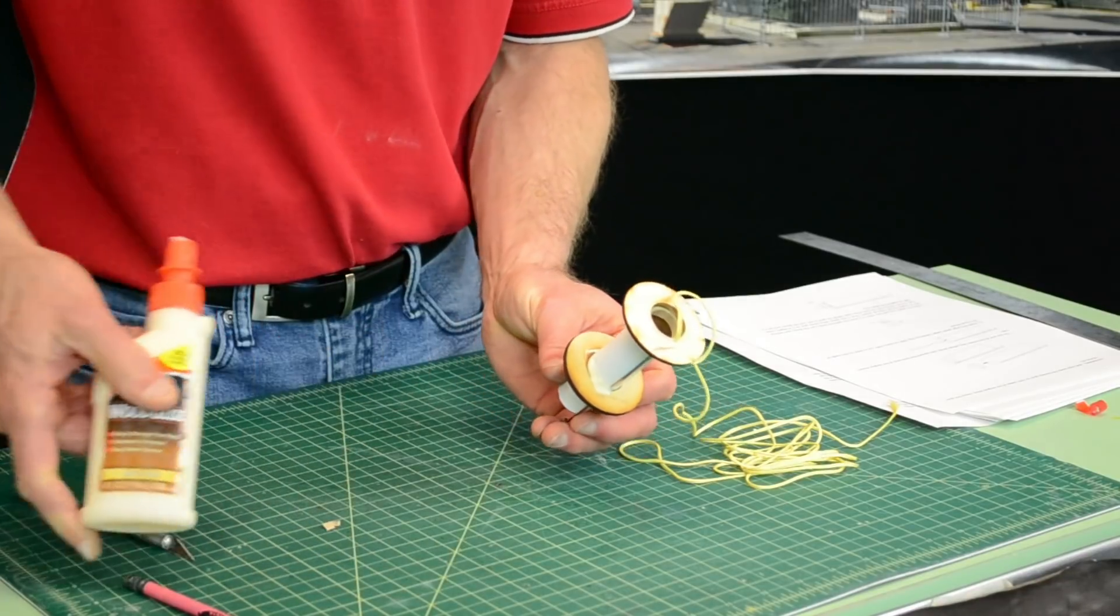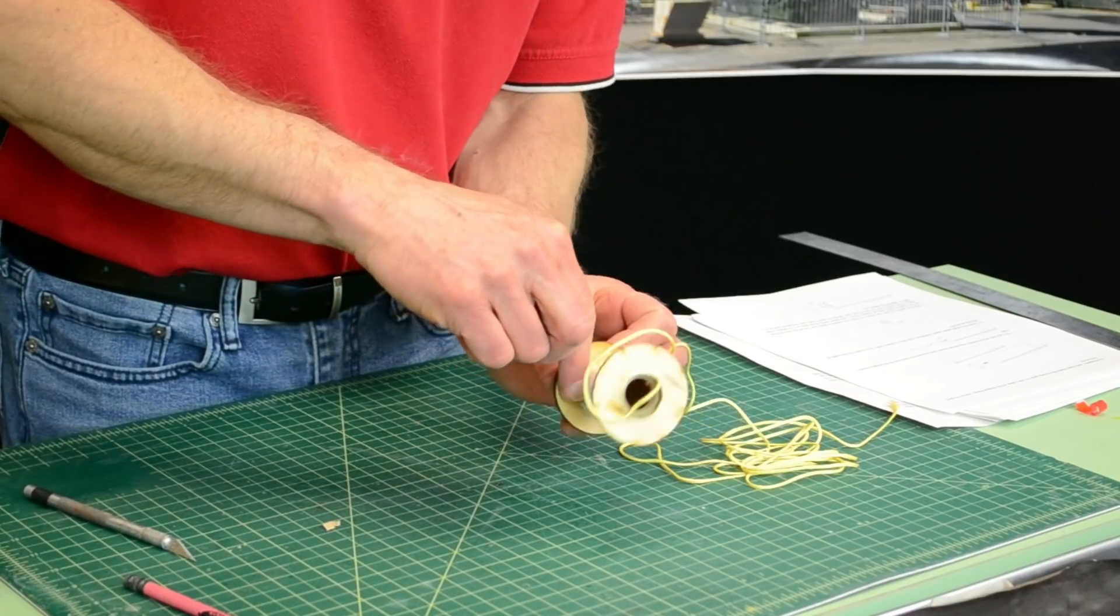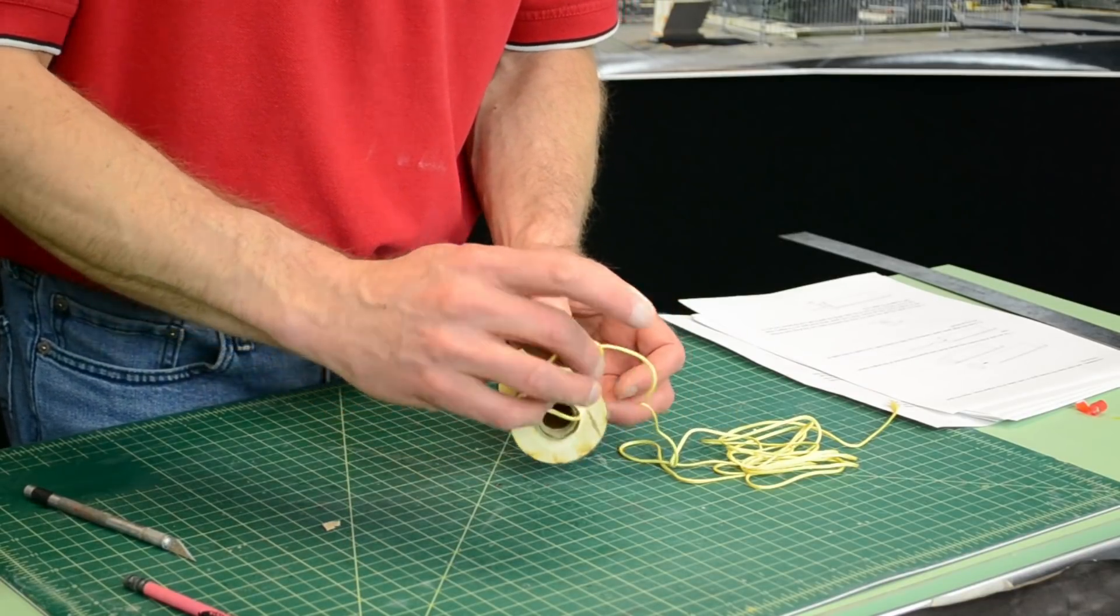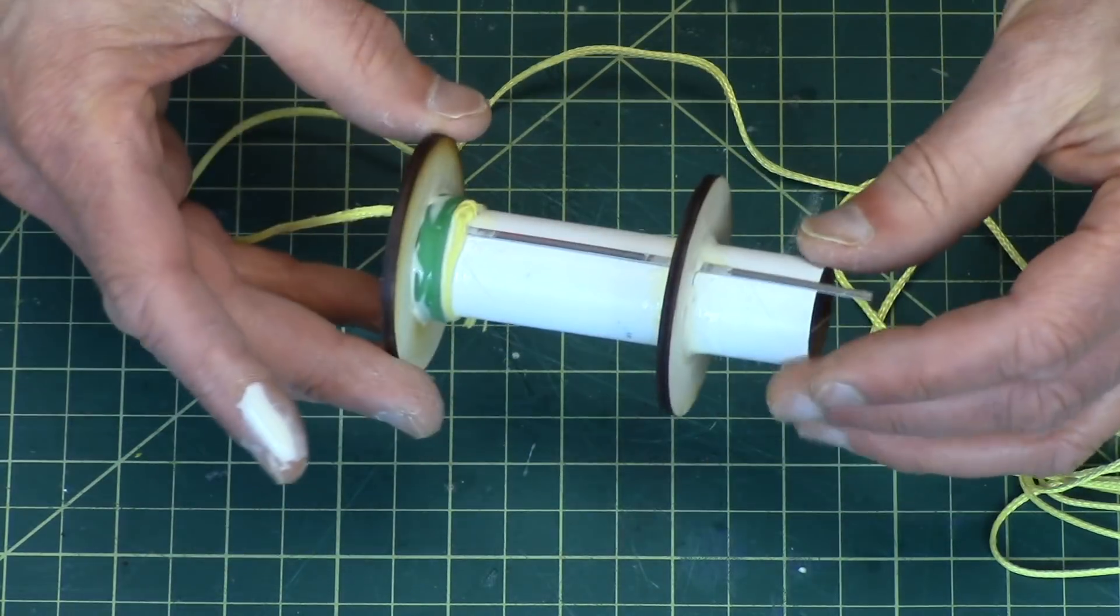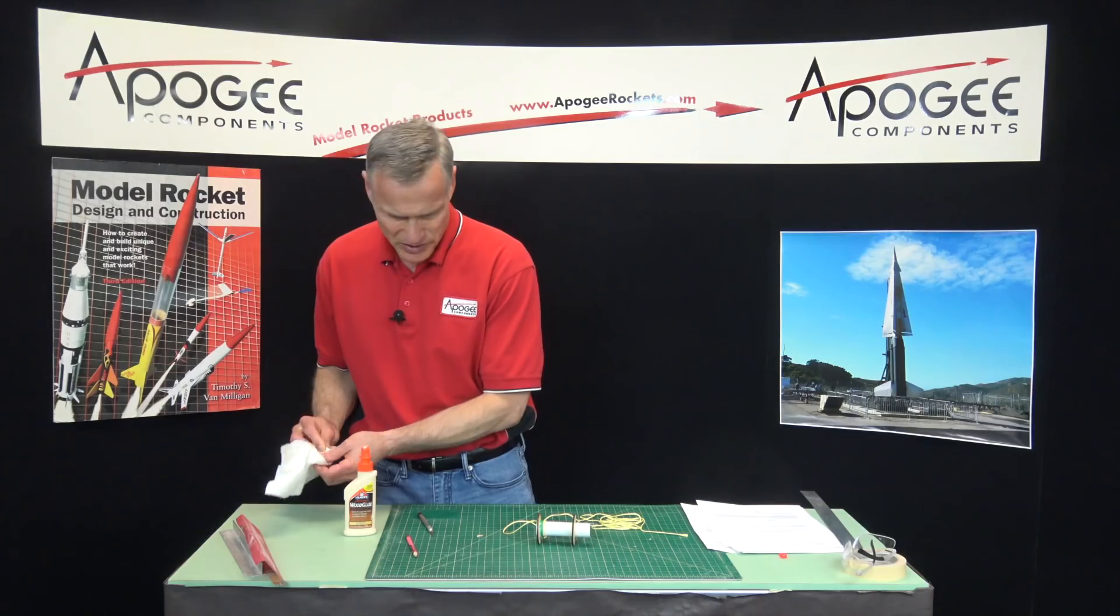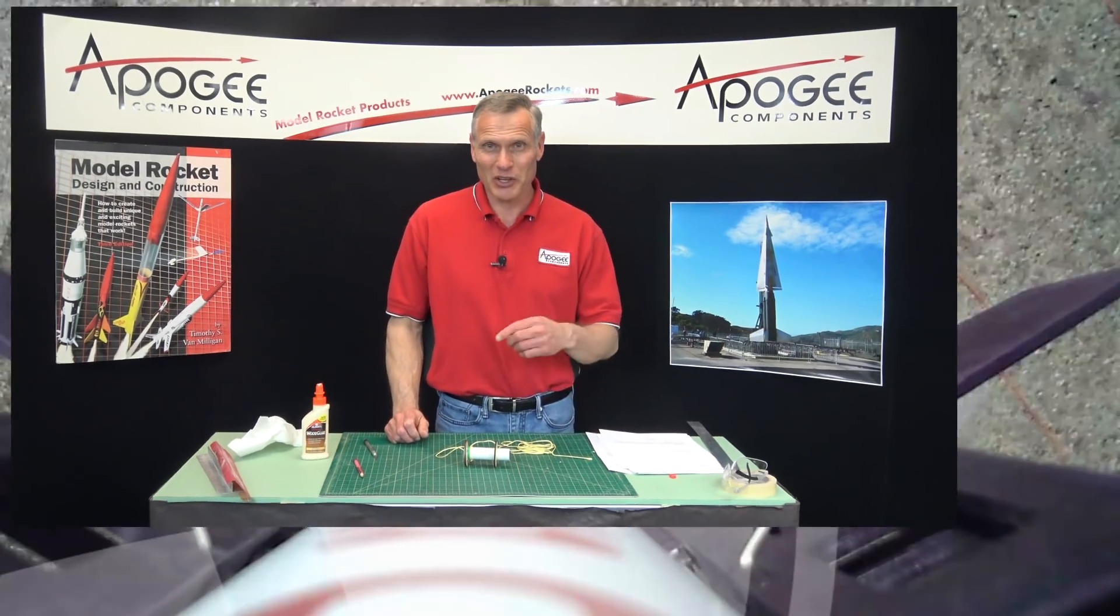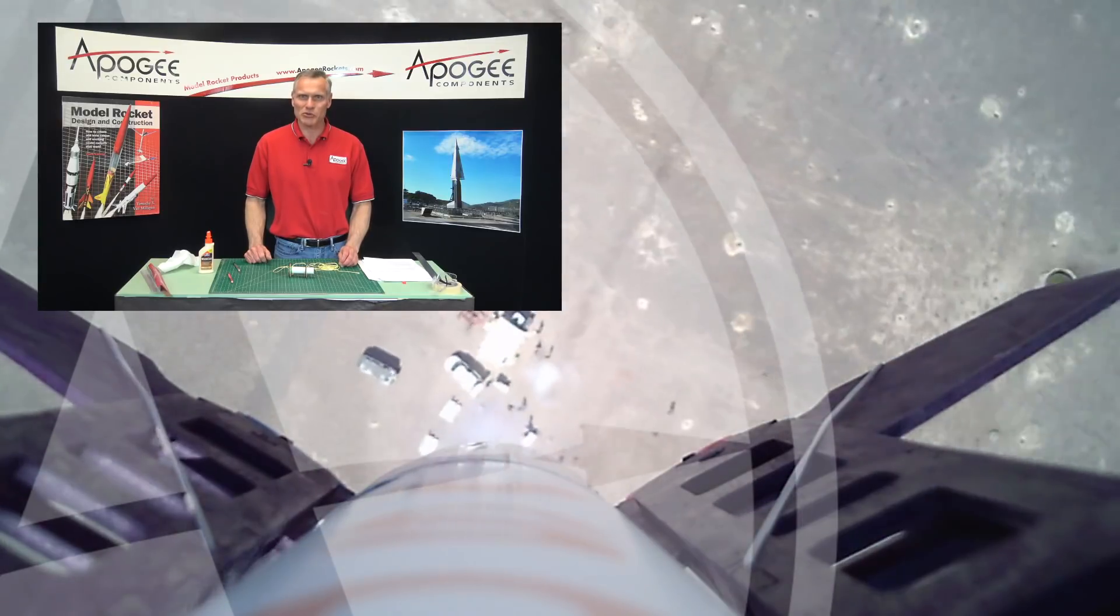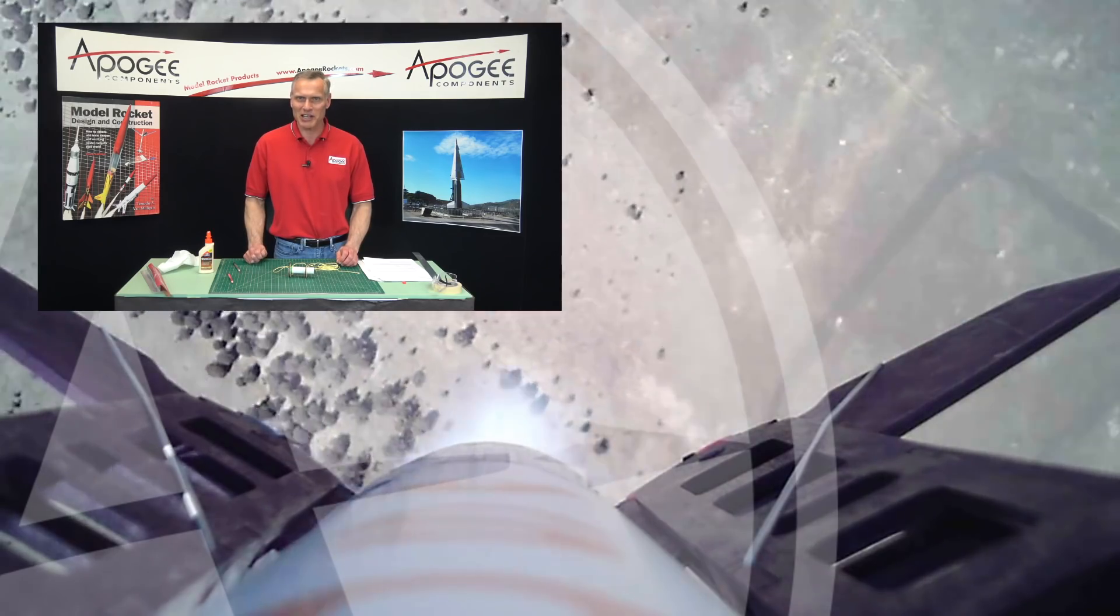And then we're just going to set it aside to dry and then wait before we can go on to the next step. All right, so there it is, there's the completed engine mount. As soon as that's dry, we can start putting it inside the tubes. So I'm Tim Van Milligan, this is the Apogee Rocketry Workshop. You're watching the construction of the flying machine rocket. You can buy it at Apogee Components at www.ApogeeRockets.com.